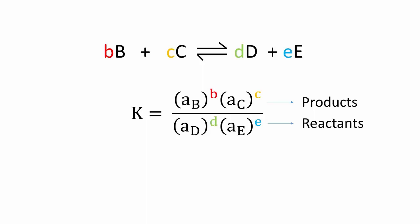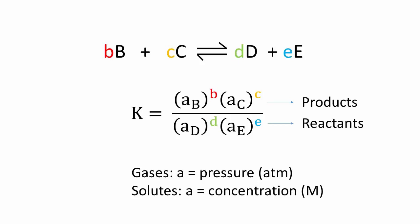The activity is a unitless quantity. More specifically, for gases, it is the numerical value of the equilibrium pressure measured in atmospheres. For solutes, it is the numerical value of the equilibrium concentration measured in moles per liter, or molarity.